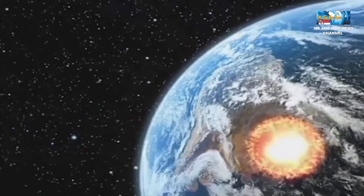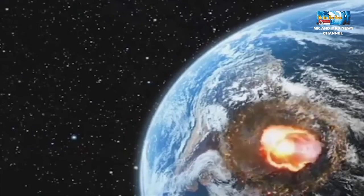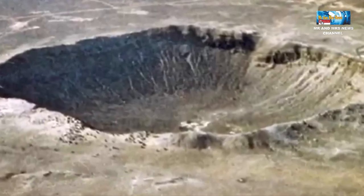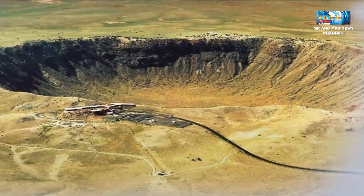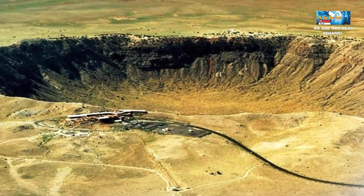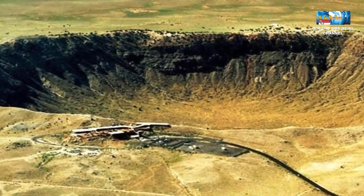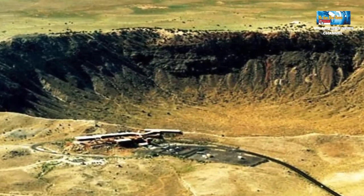Tumbukan meteorit yang sampai ke permukaan bumi ini sering banget bikin lubang-lubang besar di permukaan bumi. Salah satu contoh, lubang yang dihasilkan dari meteorit ini adalah kawah meteorit Arizona di Amerika Serikat. Lebarnya sebesar 1265 meter.